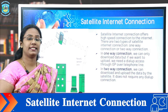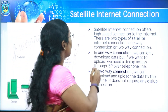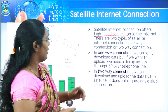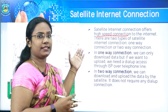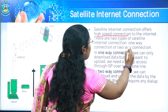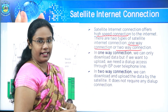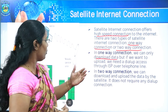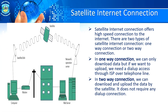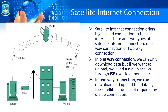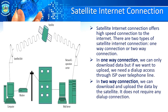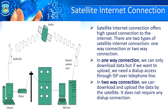The next type of internet connection is satellite internet connection. It offers high-speed connection to the internet using a satellite. There are two types in which this internet connection can be achieved. First is one-way connection and second is two-way connection. One-way connection means we can only download the data, but if we want to upload the data we need a dial-up access through ISPs over the telephone line. In two-way connection, we can download and upload the data with the help of satellite, and we do not require any dial-up connection for uploading.